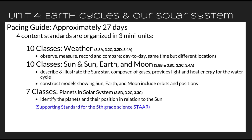The next mini-unit is 10 classes where we talk about the sun and the sun, earth, and moon. Those are two content standards that go nicely together. This is the first time your students will be looking specifically at characteristics of the sun. The standard says describe and illustrate the sun — that it's a star composed of gases, and it provides light and heat energy for the water cycle. Be sure that you keep the water cycle piece in with this standard, because that really sets the stage for when students move into the water cycle focus for 4th and 5th grade.